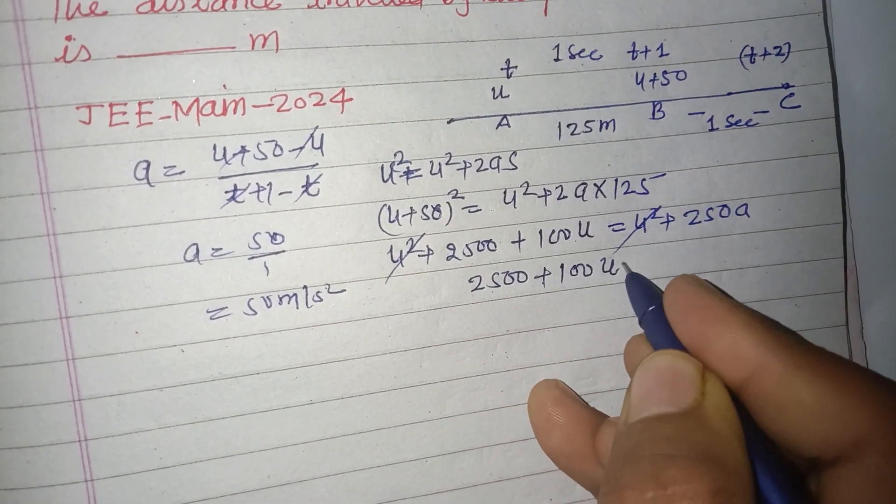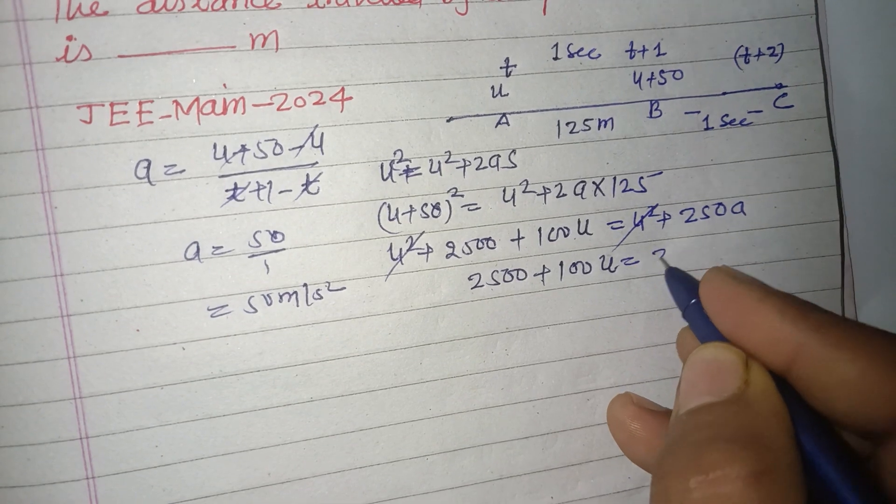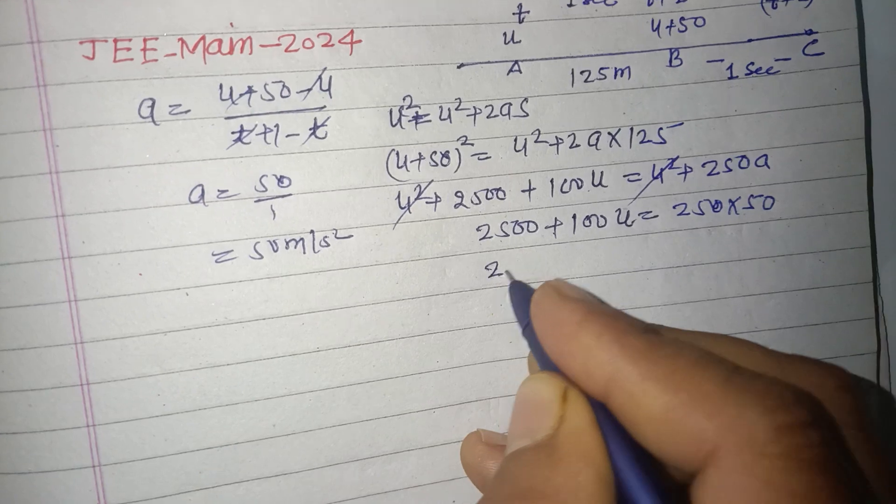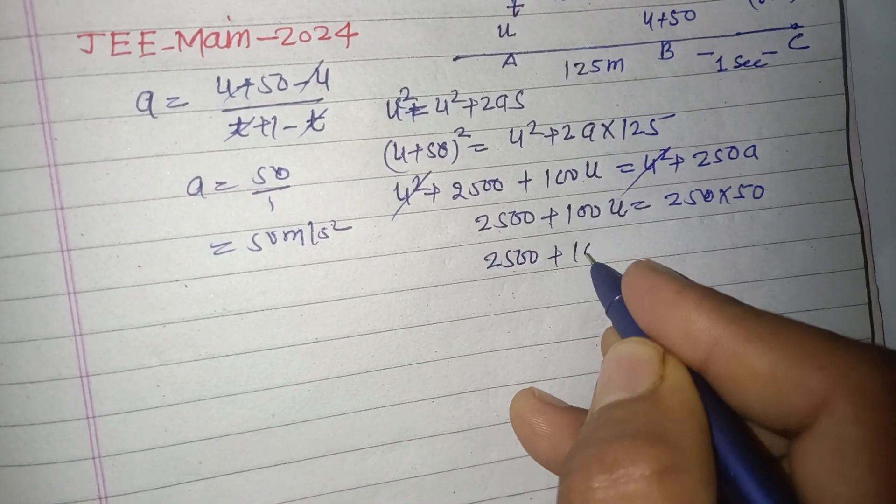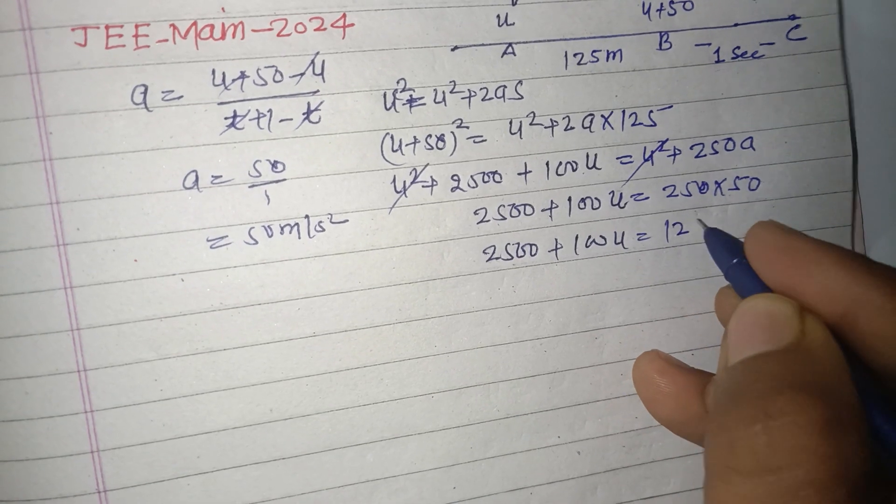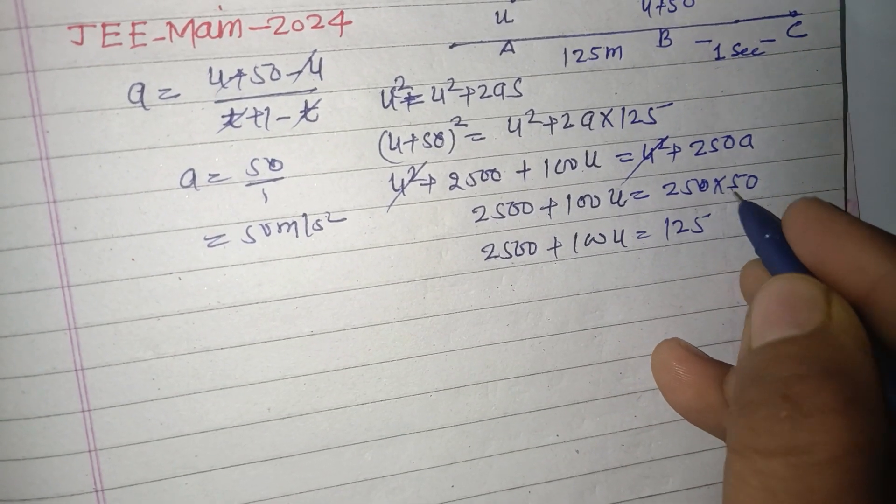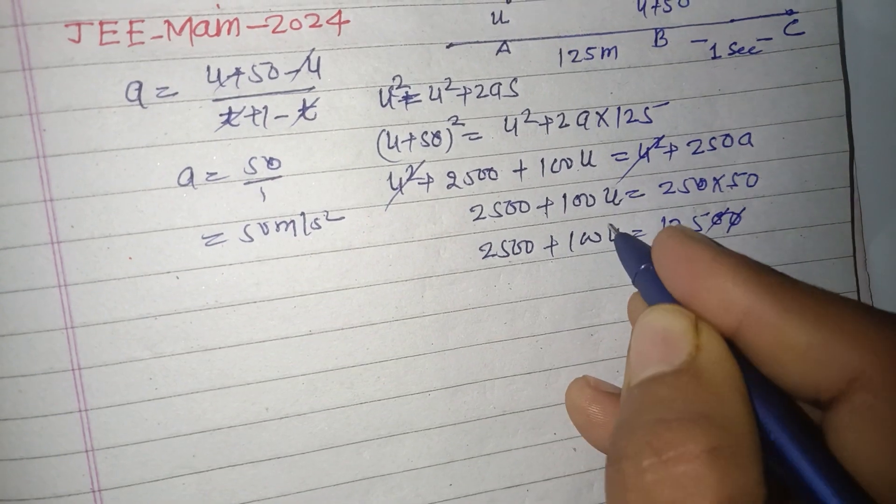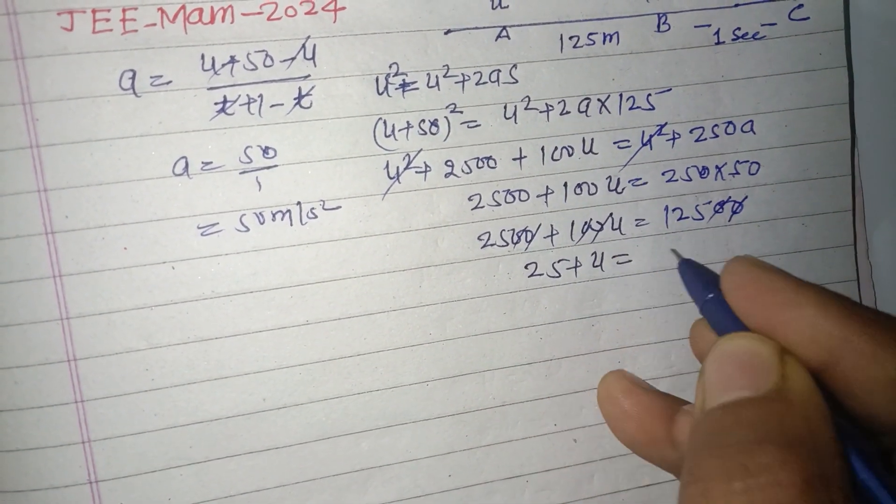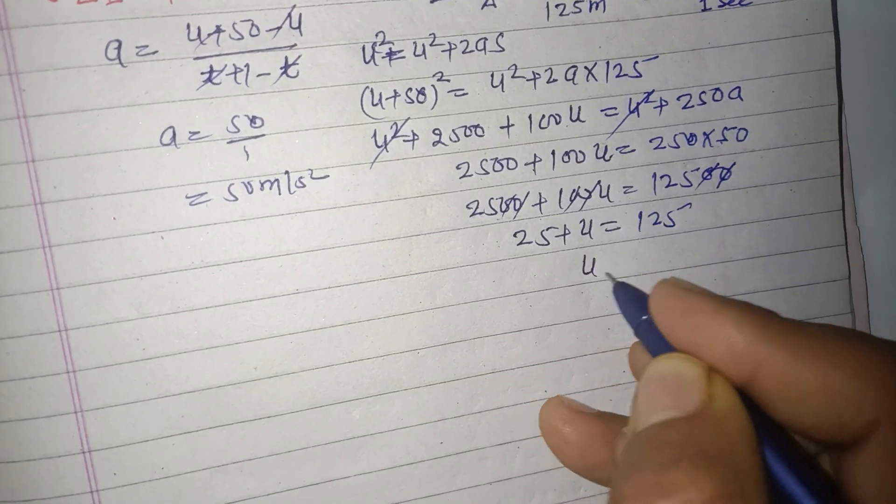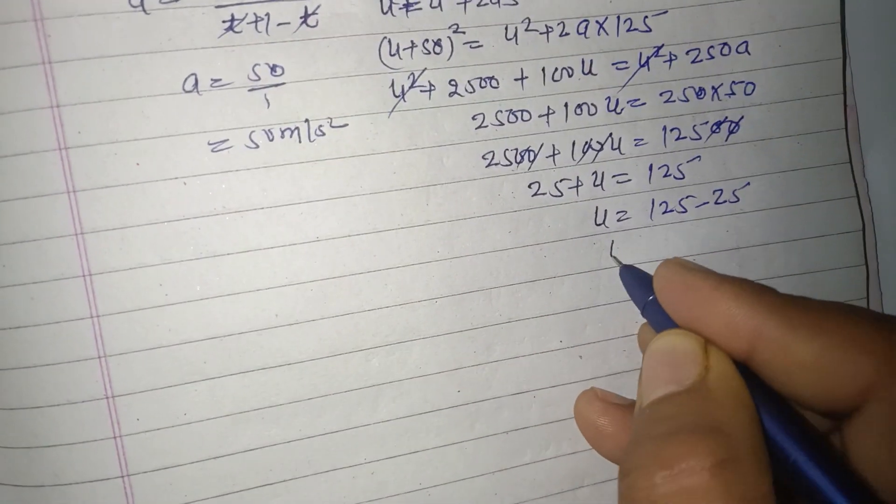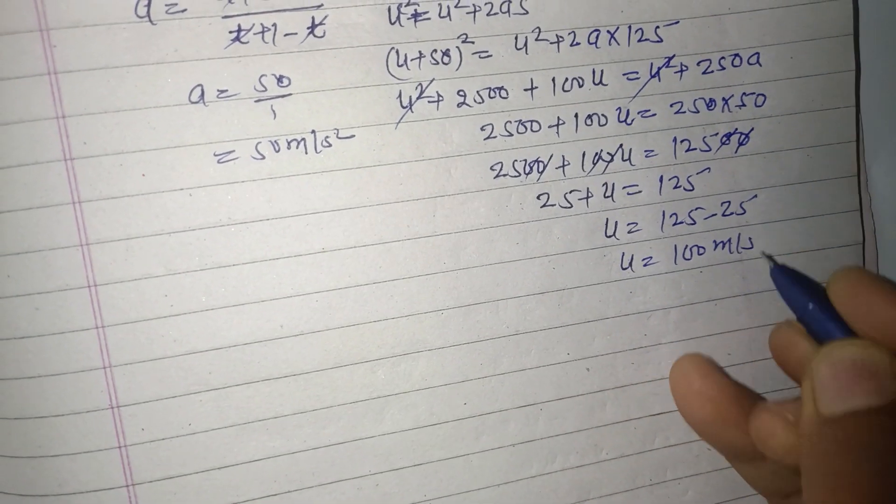Putting the value here: 2500 + 100u = 250 × 50. This is 2500 + 100u = 12500, so 100u = 12500 - 2500, which means u = 100 m/s.